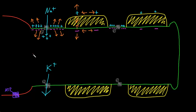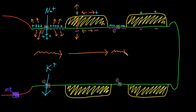Which is why we see slower conduction of the action potential through the nodes of Ranvier than through the myelinated segments, which we call saltatory conduction, where it looks like the action potential is jumping from node to node.